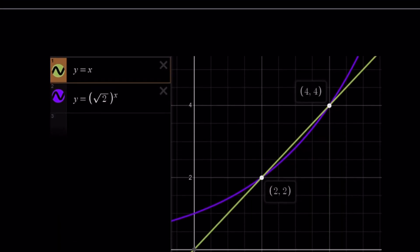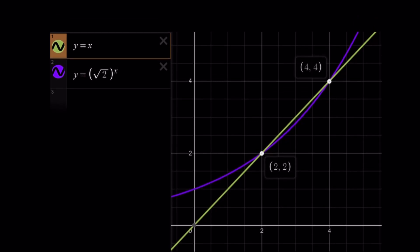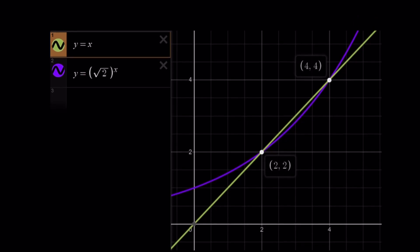Now let's see what the graph looks like. We have the graph of y equals x, and we have the graph of y equals square root of two to the power of x, which is something we used with the first method. Notice that these two graphs intersect at two points: two comma two and four comma four.